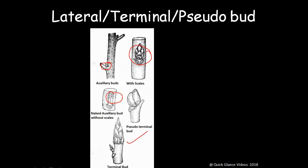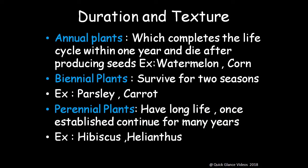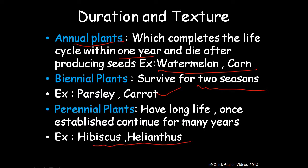Classification on the basis of duration and texture: annual plants complete their life cycle within one year and die after producing seeds — for example, watermelon and corn. Biennial plants survive for two seasons — for example, parsley and carrot. Perennial plants have a long life and once established continue to grow for many years — for example, hibiscus and oleander.